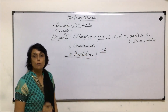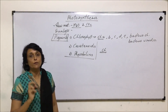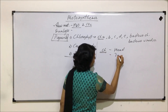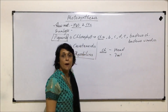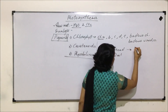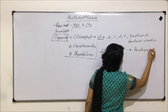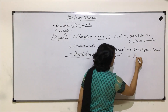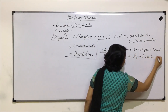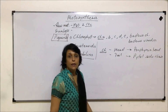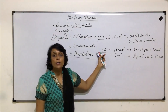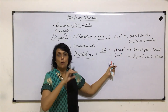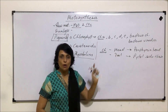The chlorophyll molecule is made up of two parts: a head and a tail. The head part is known as the porphyrin head, and the tail is known as the phytol side chain. The chlorophyll molecule has magnesium in its center, and then there are four nitrogen atoms and four pyrrole rings.